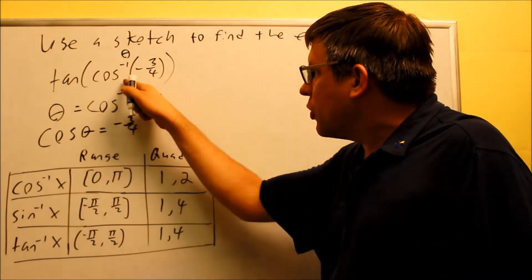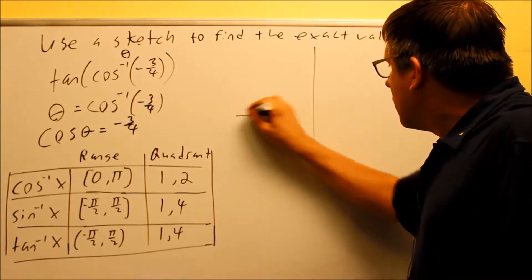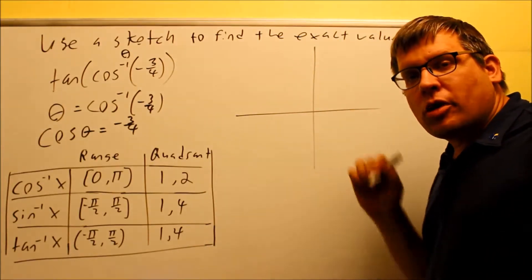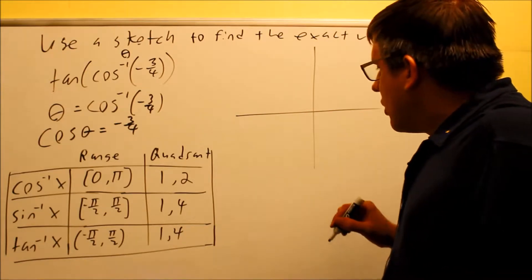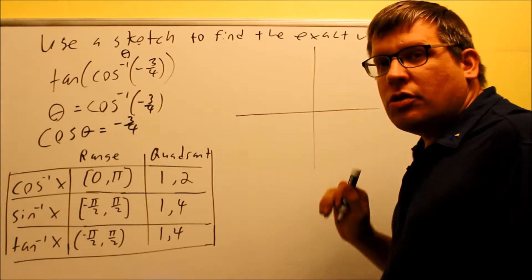Now inverse cosine is what we originally had. That says that you're only allowed to draw that in quadrant number one or quadrant number two. So because of that, I have a choice of which one to use.